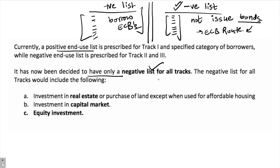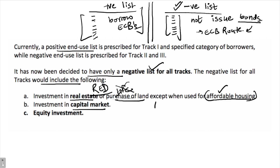It has been decided to have only a negative list for all tracks. The negative list includes: Number 1 — investment in real estate or purchase of land, except when used for affordable housing. Number 2 — investment in capital market. You cannot borrow through the ECB route and invest the proceeds in the capital market, whether equity or bonds. Similarly, equity investment is not permitted as an end use of ECB proceeds.